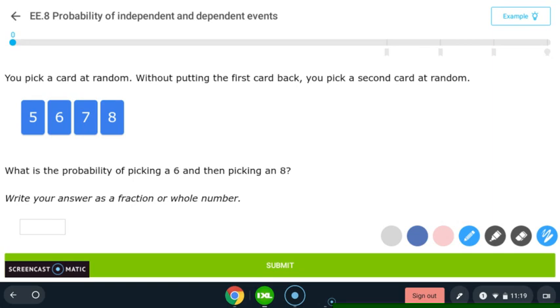Dependent events are like this first question that we have here. So a dependent event, one action affects the second one. So if we take a look at this, you pick a card at random and then it says without putting the first card back. So because we're not putting the first card back, that's going to affect what we can get the second time around. So without putting the first card back, you pick a second card at random.